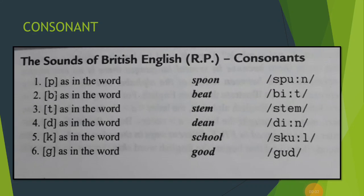Hello dear students. In today's video lesson, I'm going to discuss with you the 24 different consonant sounds of British English. You have learned that there are 26 alphabets in English, but today we are going to learn 24 different consonant symbols of British English language.